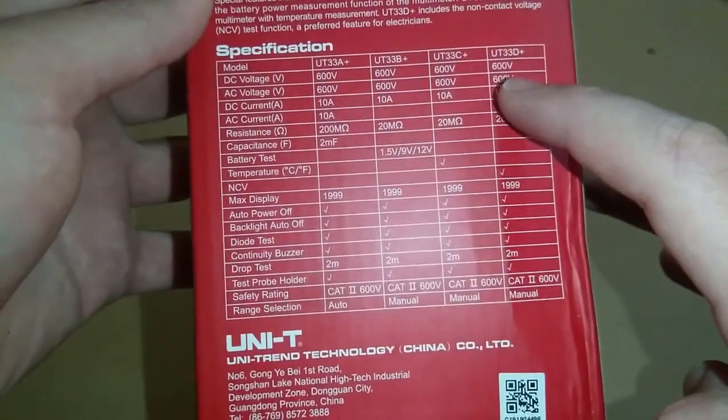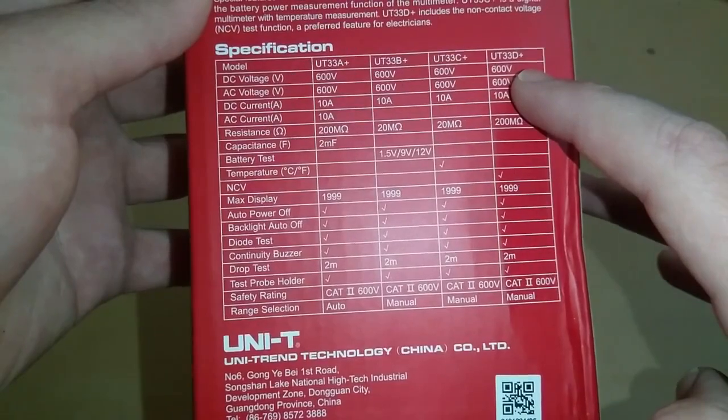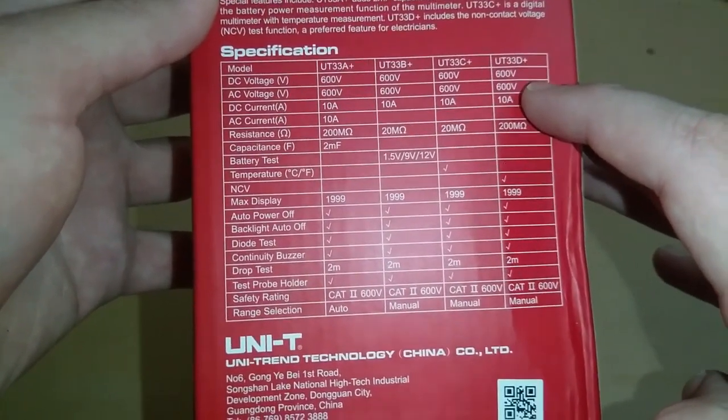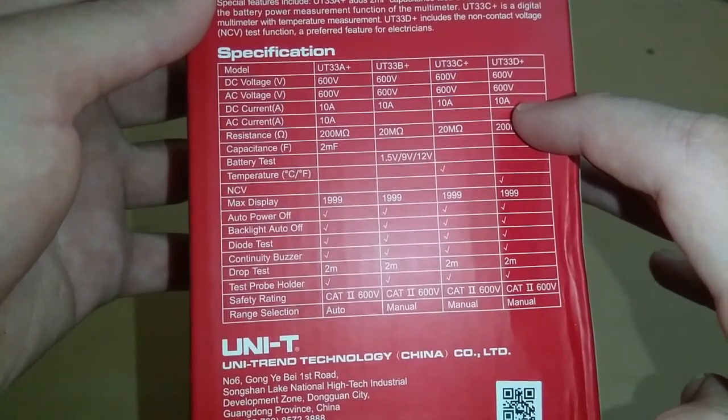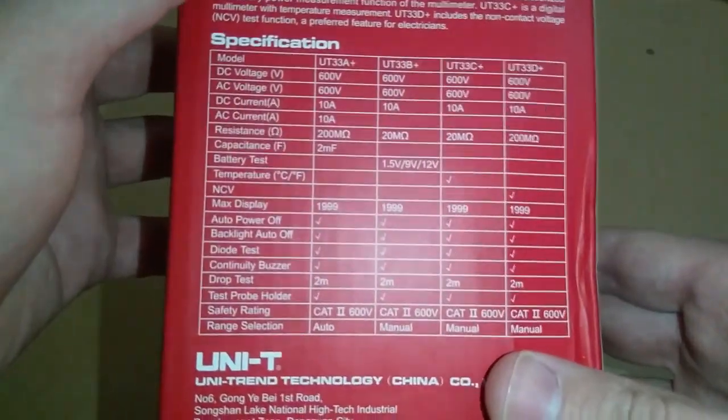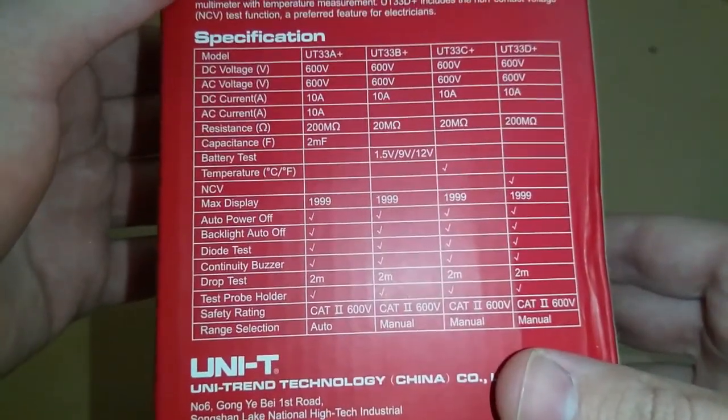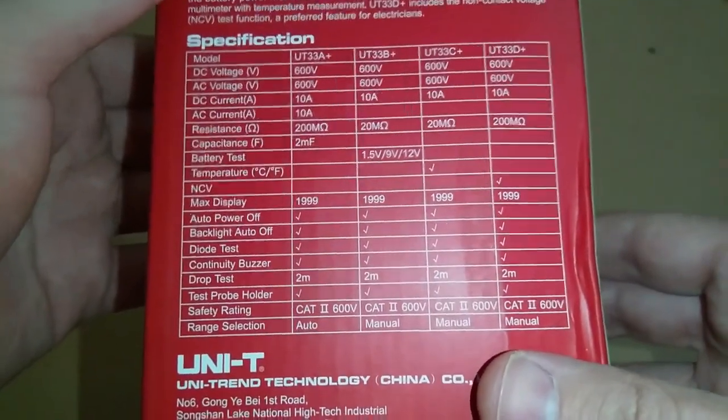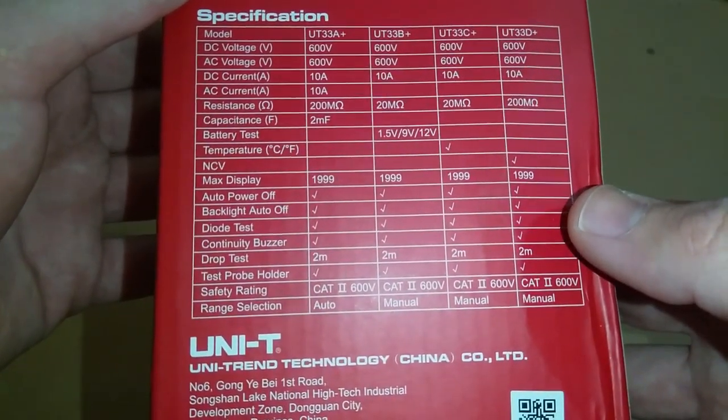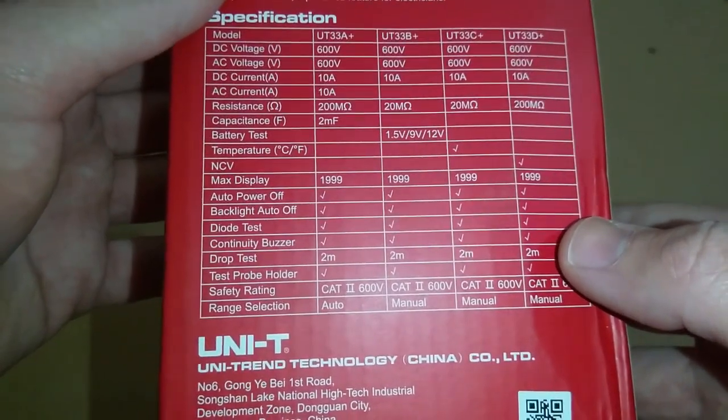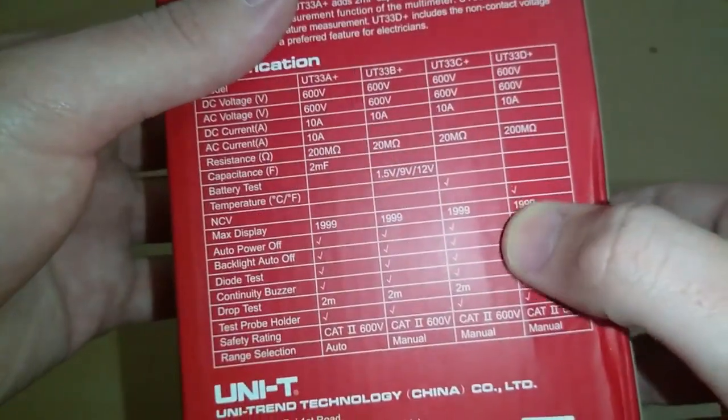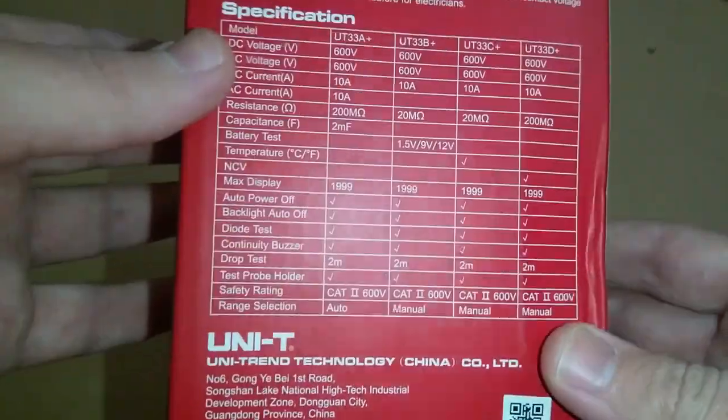DC voltage to 600 volts, it can measure DC voltage up to 600 volts, AC voltage up to 600 volts, DC current up to 10 amperes and it doesn't measure the AC current and resistance up to 200 mega ohm. It doesn't measure capacitance or battery test or temperature.